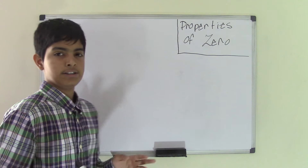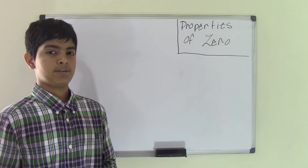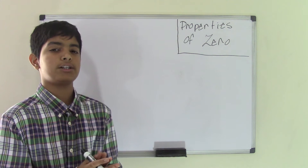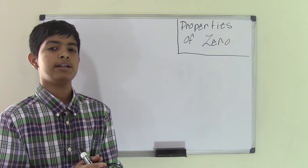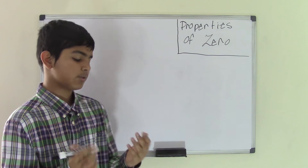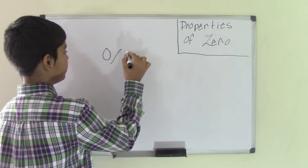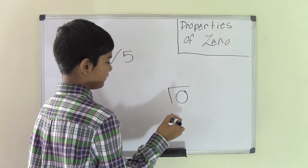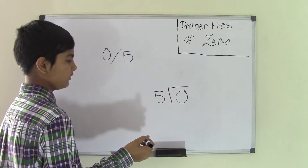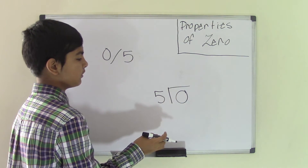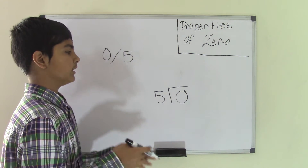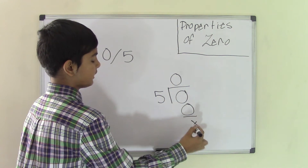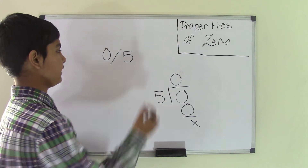Now let's move on to division. You can divide a number by zero, but first let's talk about dividing zero by a number. The property says that if you are to divide zero by any number, the quotient is going to be zero itself. Let's take zero and divide it by five. Zero is going to be the dividend, and five is going to be the divisor. What times five is going to give zero? Well, you know that any number times zero is going to be zero. So five times zero is zero, and we get the quotient as zero.